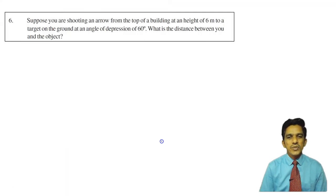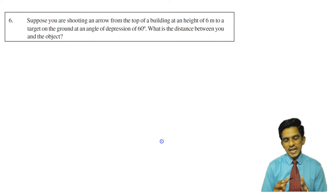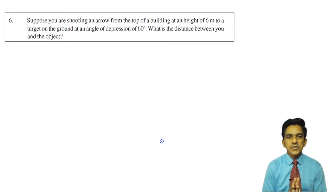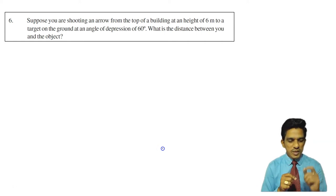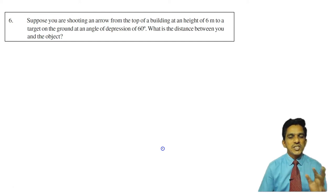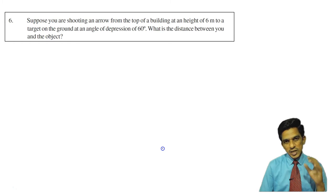This is question number 6. Suppose you are shooting an arrow from the top of a building at a height of 6 meters to a target on the ground at an angle of depression of 60 degrees. What is the distance between you and the object? You are on top of a building of height 6 meters, shooting at an object on the ground, making an angle of 60 degrees with the object from the top of the building.